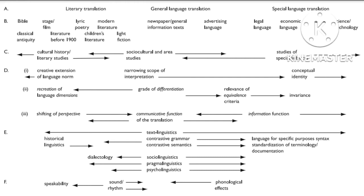Level B indicates prototypical basic text types. For example, in literary translation there are Bible, stage or film, lyric poetry, modern literature, classical antiquity, literature before the 90s, children's literature, and light fiction. For general translation, there are newspaper or general information texts and advertising language. For special language translation, there are legal language, economic language, medicine, science, and technology.